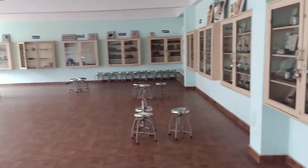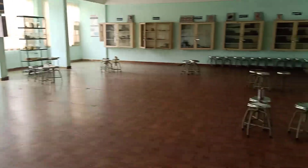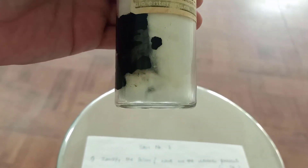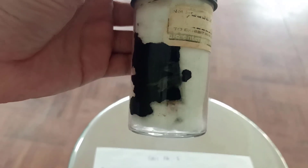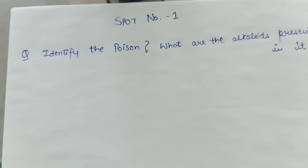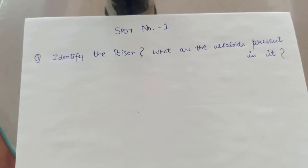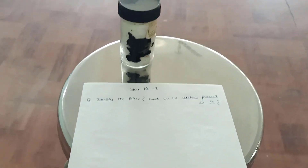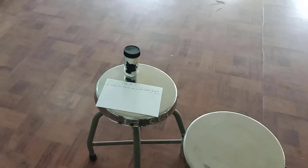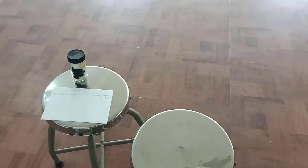This is spot number 1. This was opium. The question asked was: identify the poison. What are the alkaloids present in it? This comes under the neurotic group and further under Somniferous — Papaver somniferum. There are two different forms of alkaloids present in it.